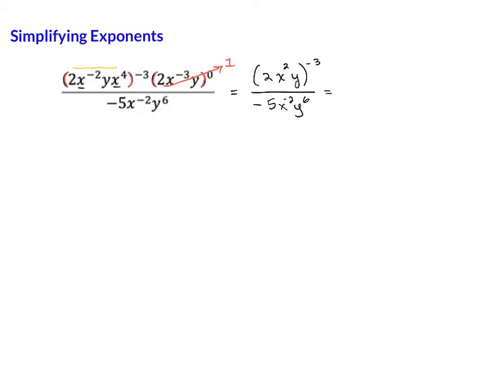So the 2, uh-oh, it's missing its exponent, so it's a 1. The y is missing it. There's a 1 here. Oh, and the negative 5 is missing an exponent, so that's the 1 there.